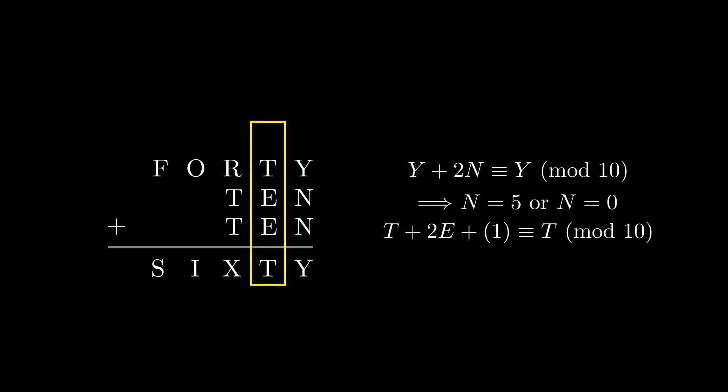This tells us that our assumption of a carry was wrong. There couldn't have been a carry from the first column. From this, we can conclude that N must be 0, since setting it equal to 5 would create a carry. Moreover, when the second column doesn't have a carry, it has the same structure as the first column.